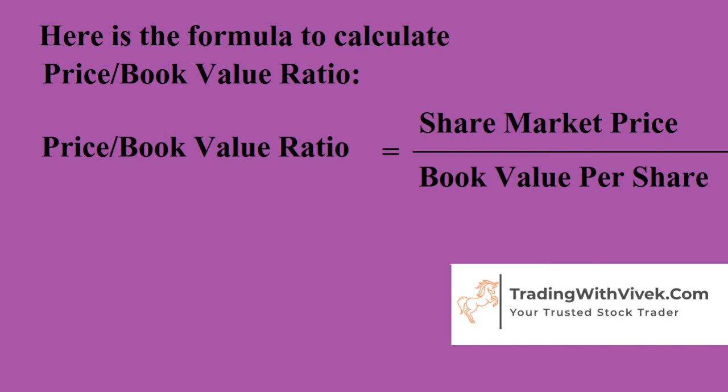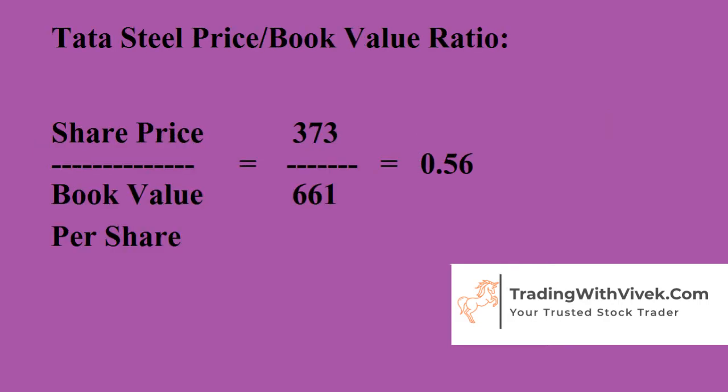Now let's move on to how to use the Price-to-Book Value ratio practically. Take Tata Steel as an example: the share price is quoting at around 373 and the book value per share is 661. If we divide 373 by 661, we get a PBV ratio of 0.56. This means when we are buying one share of Tata Steel, we are paying 0.56 rupees for every 1 rupee worth of assets.